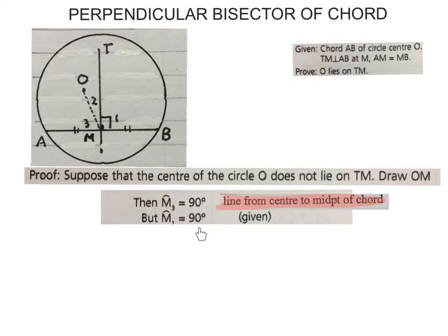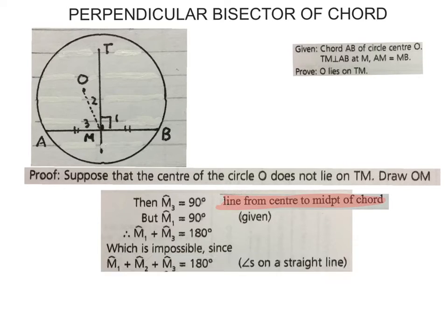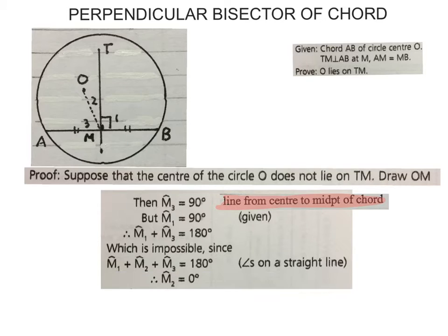Angle M1 equals 90 degrees — that was given. Then M1 plus M3 would add up to 180 degrees. Don't lose it on this piece. Which is impossible, since M1 plus M2 plus M3 equals 180 degrees — all three angles on a straight line. Therefore M2 will be 0 degrees; we've already used the full 180 degrees.